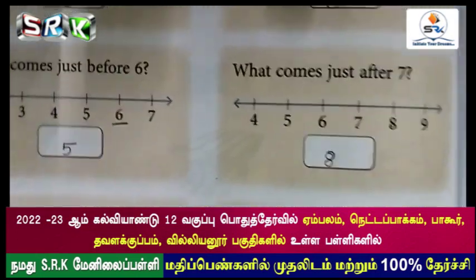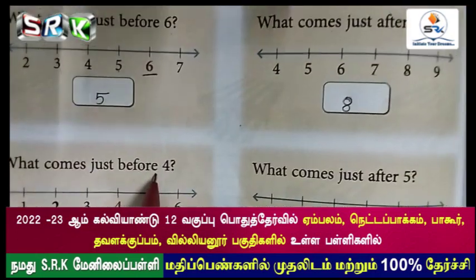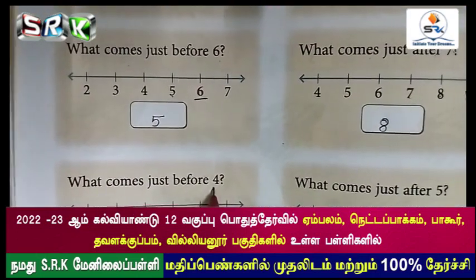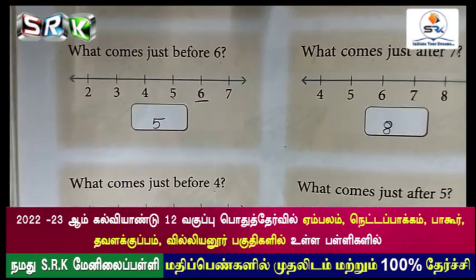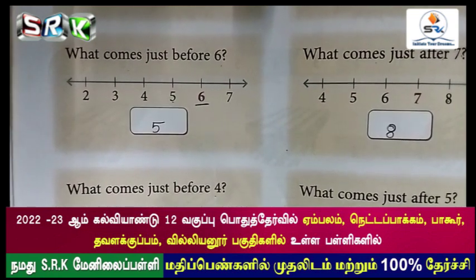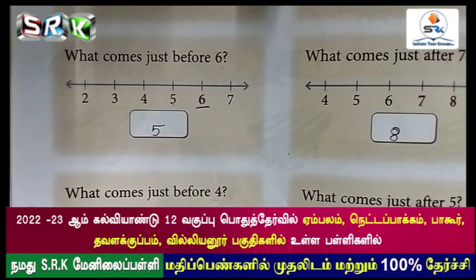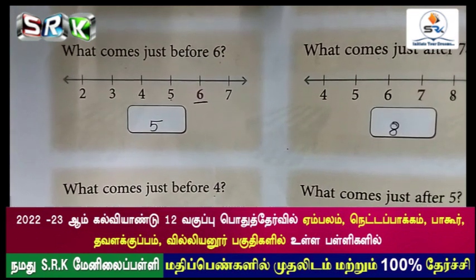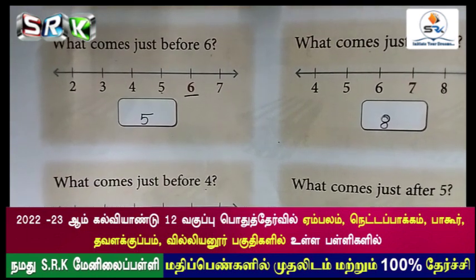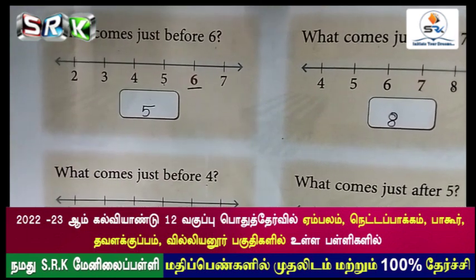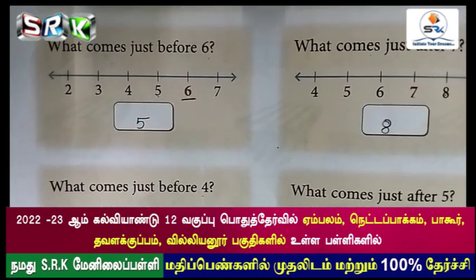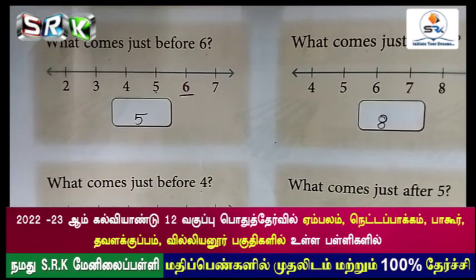Next one: what comes just before 4? Here is the number line with numbers. The question is: 4 before number is 3. Write 3 in the box neatly. Don't scribble on your book, students.